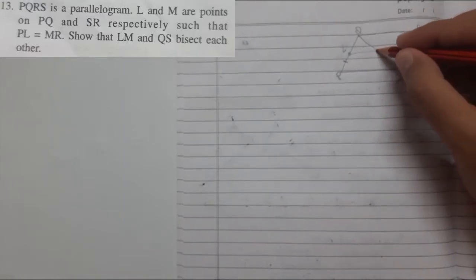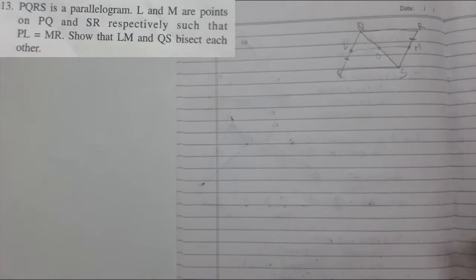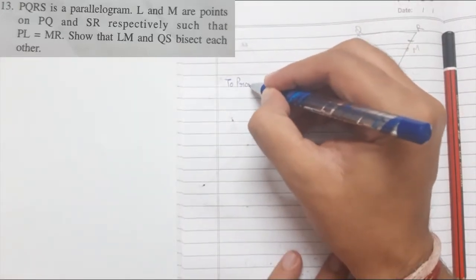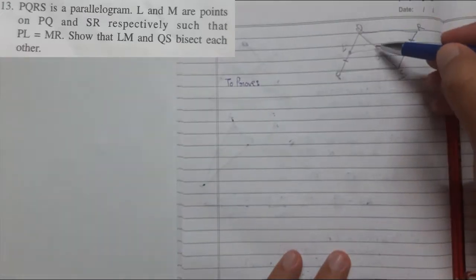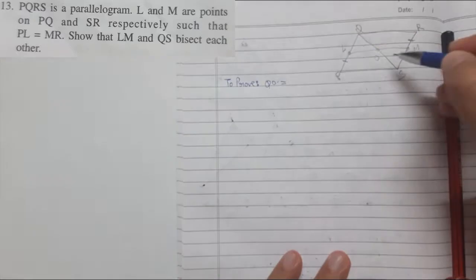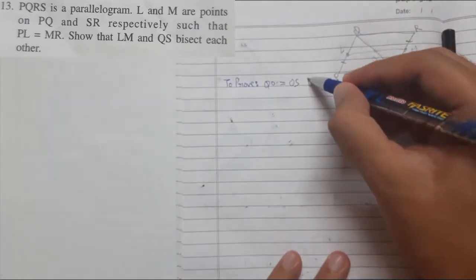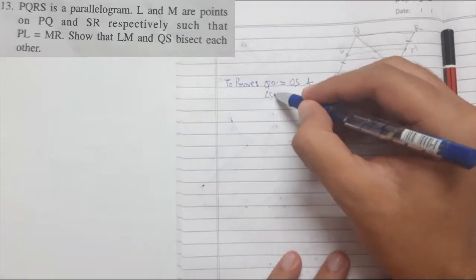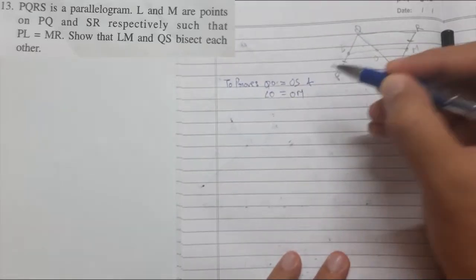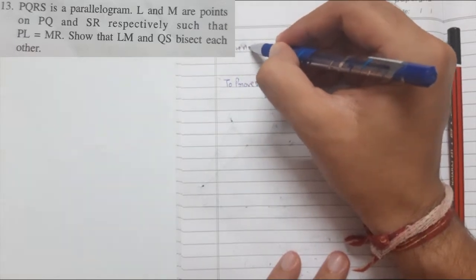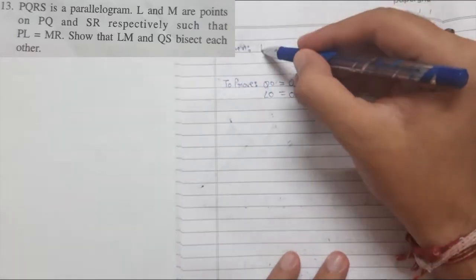The word 'bisect' is very important. Bisect means dividing something into two equal parts. So LM bisects QS and QS bisects LM. We need to prove that QO equals OS and LO equals OM. The given information is that PL equals MR.